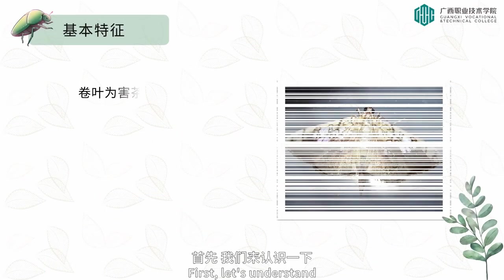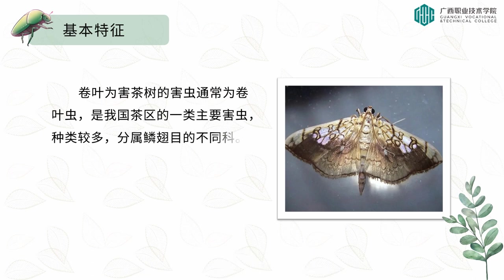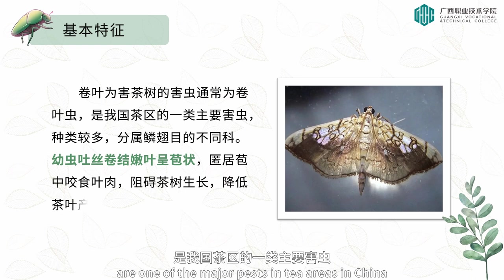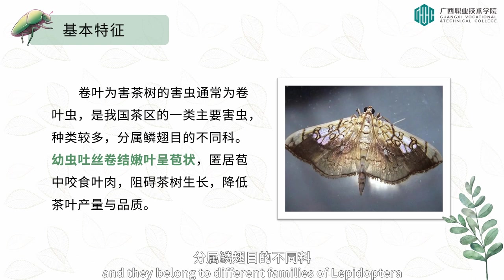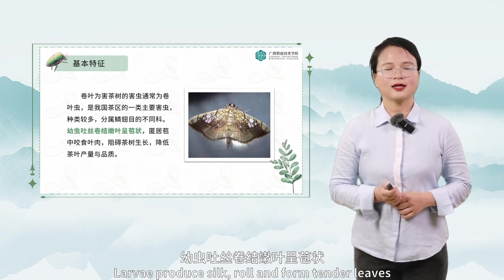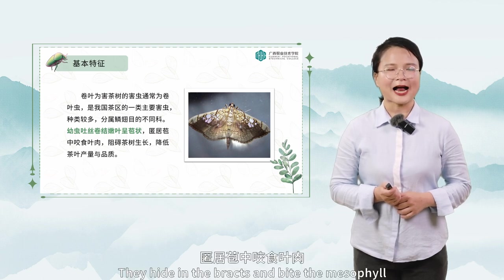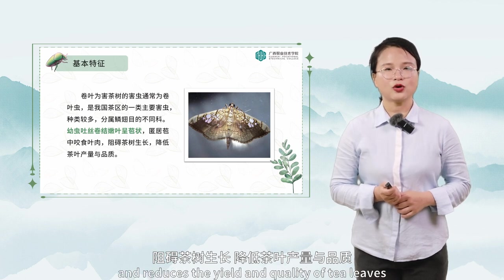First, let's understand the leaf roller pests that harm tea trees. Curl mites are one of the major pests in tea areas in China. There are many species, and they belong to different families of Lepidoptera. Larvae spin and curl tender leaves into the shape of bracts, hide in the bracts, and bite the mesophyll, which hinders the growth of tea trees and reduces the yield and quality of tea leaves.